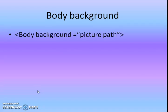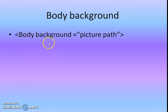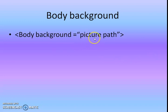Today let's discuss alignment and also headings. First one is background — last section we discussed how to change background color. Now suppose you want to set your background as an image. To set an image as your background, use the body tag with the keyword background: body background equals the picture path. Right-click the mouse, choose properties to get the picture path, then copy and paste it here — remember to paste the picture path in between double quotes.